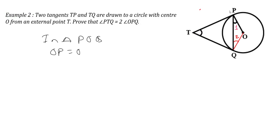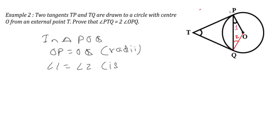Now, first we will consider triangle POQ. In triangle POQ, we have OP equal to OQ, as you know these are radii. OP and OQ will be equal because they are radii of the same circle. Therefore, using the isosceles property, I can write angle 1 is equal to angle 2 — by isosceles property, angles opposite to equal sides are equal.